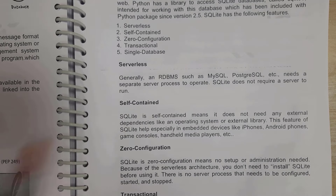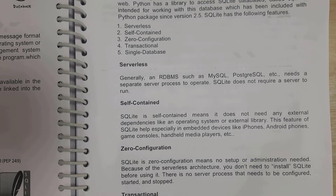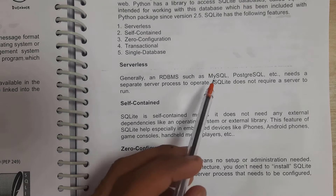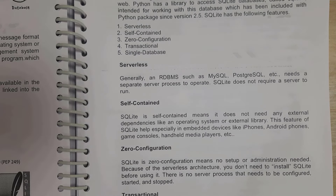These are the features of SQLite3. The first one is serverless. Normally, if you want to connect to a database, we need a server. But in SQLite3, there is no need for a server. For example, if you consider another API like MySQL and PostgreSQL, we need one server to connect to the database. But in SQLite3, there is no need for a server.